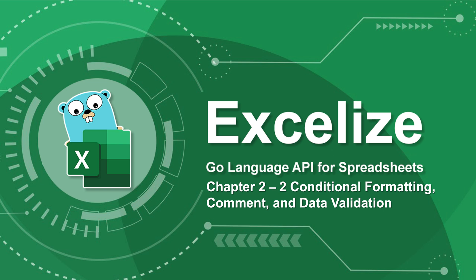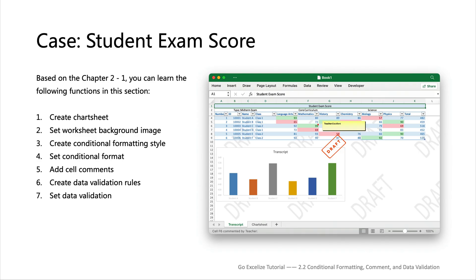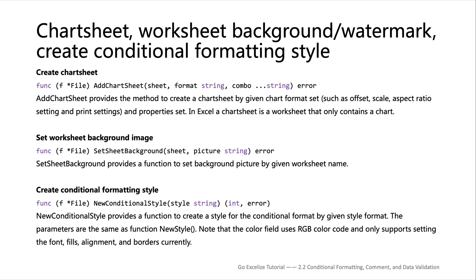Hello everyone, this is the second chapter of the Excelize tutorials, section 2. I will show you how to create a chart sheet in the workbook using Excelize, create conditional formatting, set the background image for the worksheet, set data validations, and add comments. Continuing from the previous tutorials, I will be using another seven functions provided by Excelize.